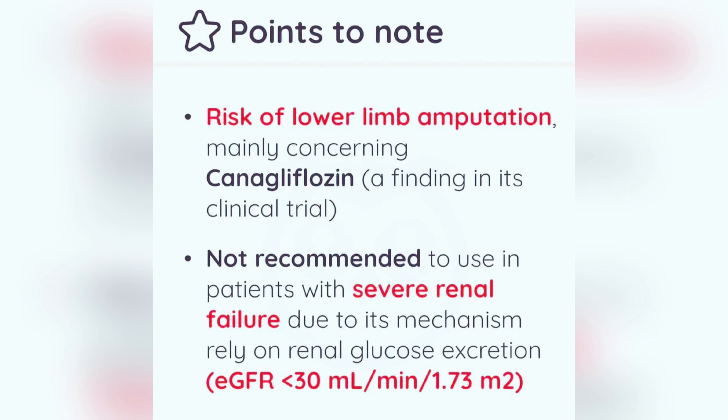Key points to note: risk of lower limb amputation, mainly concerning canagliflozin as a finding in its clinical trial. Not recommended for use in patients with severe renal failure, due to its mechanism relying on renal glucose excretion, e.g., GFR less than 30 milliliters per minute.